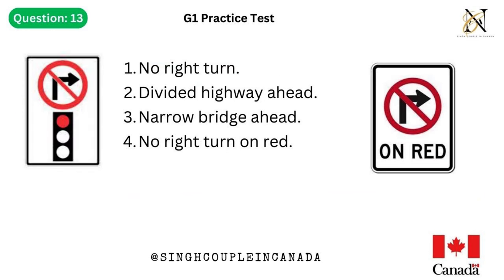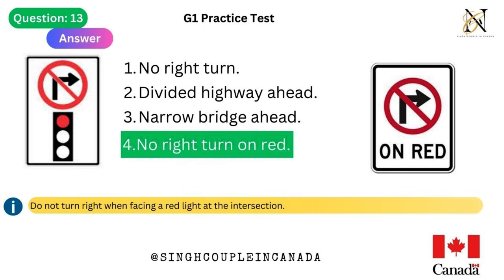Question 13. This traffic sign means: 1. No right turn. 2. Divided highway ahead. 3. Narrow bridge ahead. 4. No right turn on red. Answer is 4. No right turn on red — do not turn right when facing a red light at the intersection.